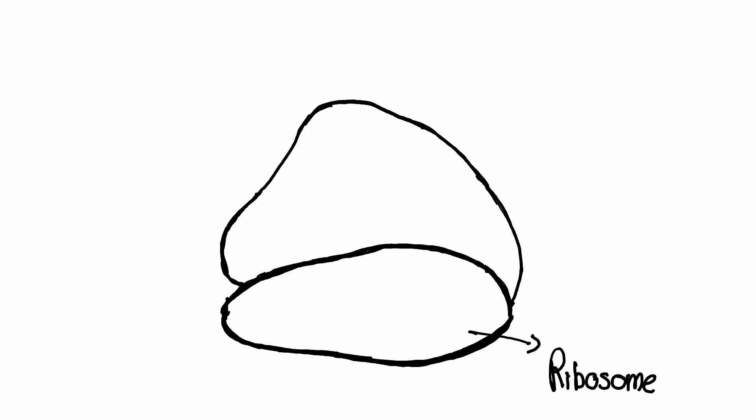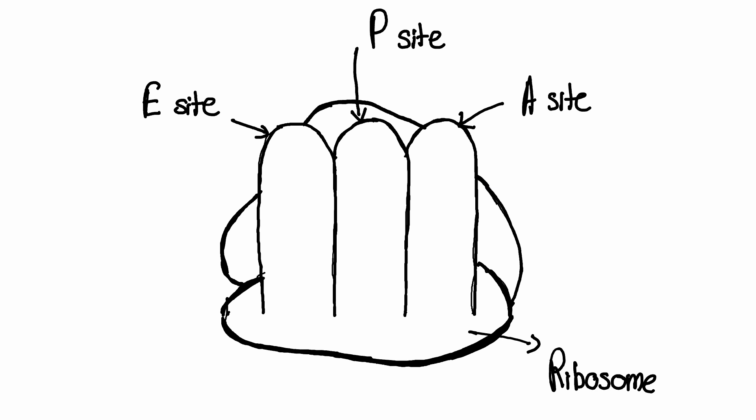So you'd start with a ribosome. It has three sites: the E site, P site, and A site.